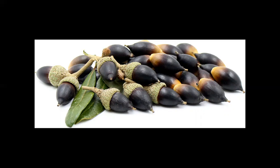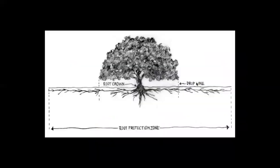These trees are a thirsty bunch. A mature oak can drink 50 gallons of water per day through its deep and broad roots. Acorns that don't become new oak trees ripen in the ground, and by late summer, they are a natural food source for wildlife.